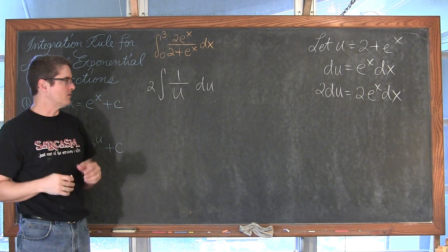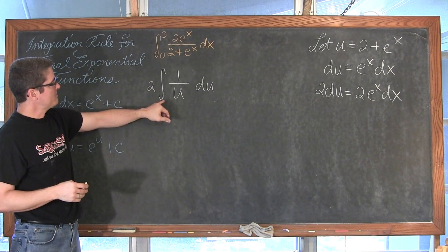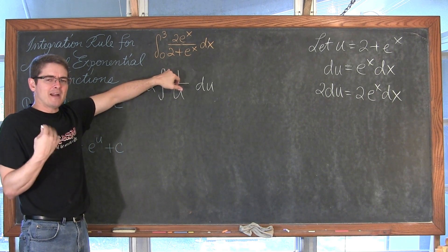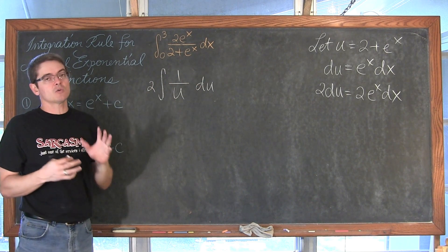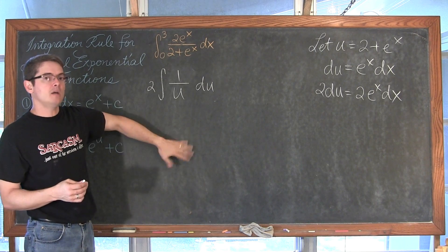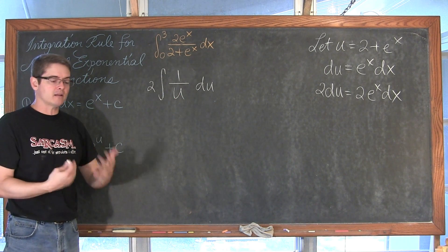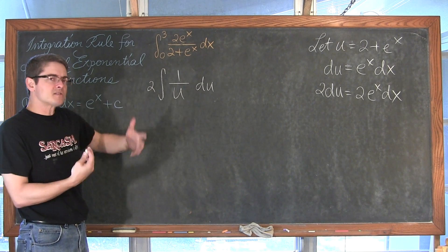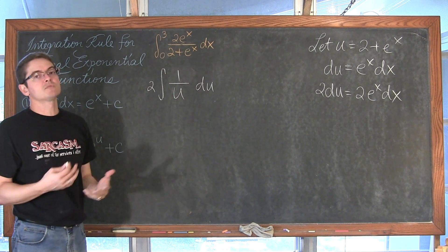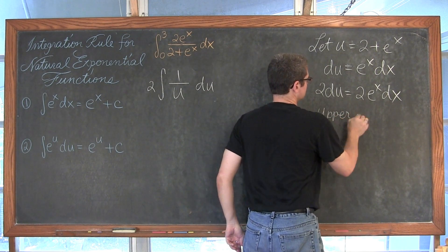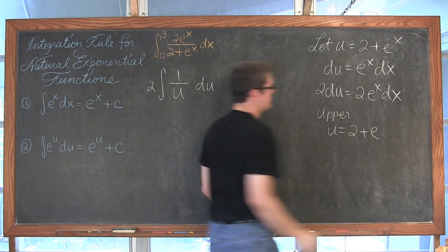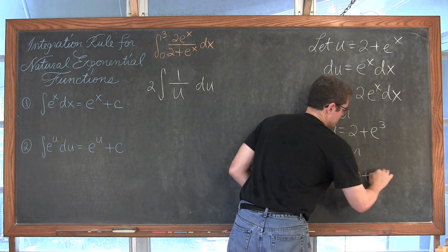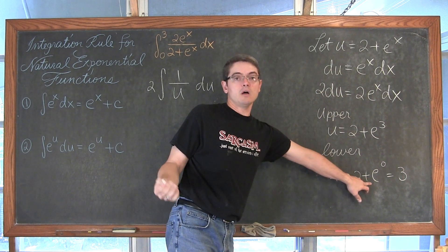Since my limits of 0 and 3 are in terms of x, I need to convert them to u. For the upper limit x equals 3: u equals 2 plus e to the third. For the lower limit x equals 0: u equals 2 plus e to the 0, and anything to the 0 power is 1, so 2 plus 1 equals 3. So my lower limit is 3 and my upper limit is 2 plus e to the third.